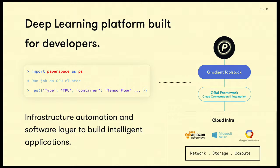One of the biggest bottlenecks in the adoption of deep learning today is infrastructure. The way we think about eliminating that particular bottleneck is by transforming infrastructure into code. What that means practically is we provide an environment where a developer can safely assume that infrastructure is homogenous, and what we're doing behind the scenes is unifying disparate compute architectures into a single command line argument.